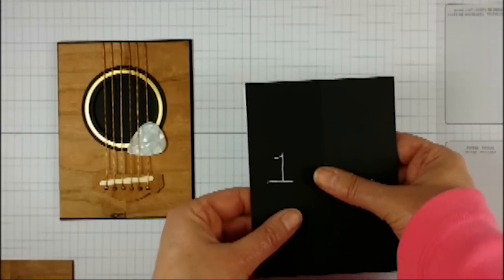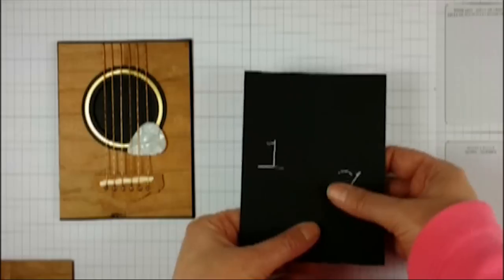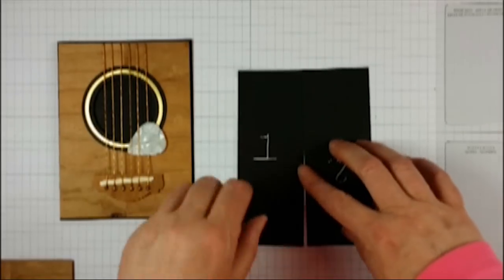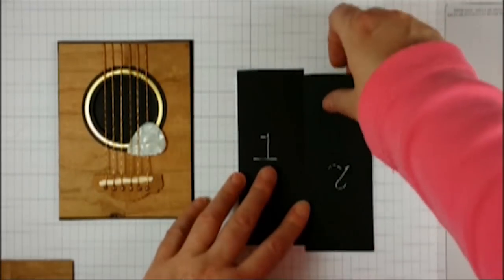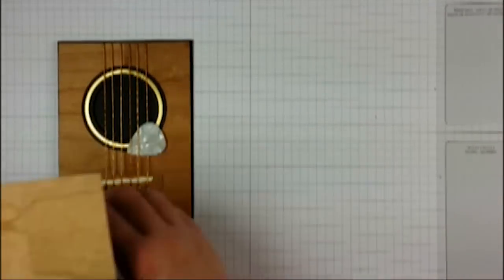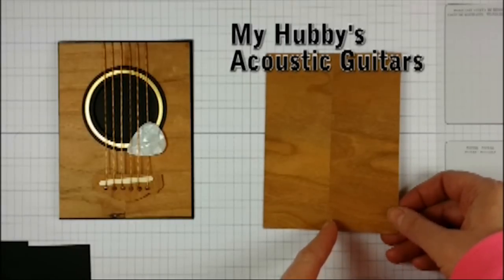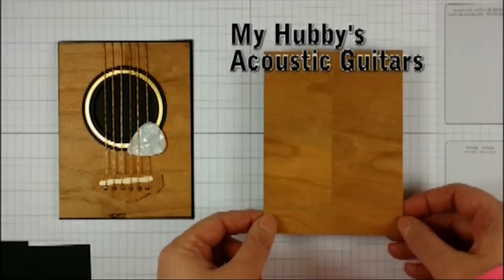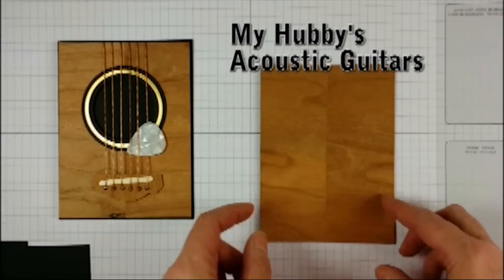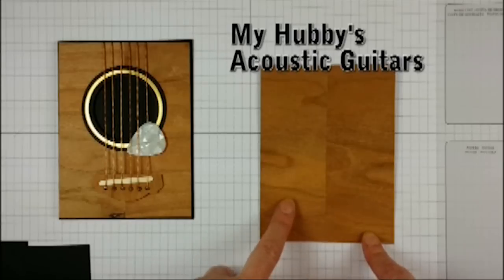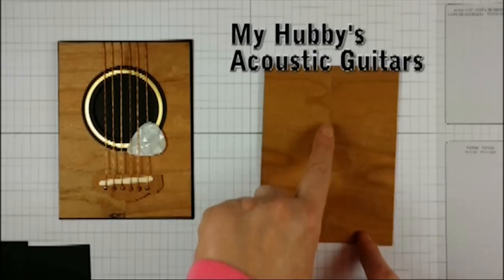Then I glued it down to a piece of backing cardstock to keep it secure because I'm going to be doing a lot of gluing and die cutting. I wanted the seam down the center because all of his acoustic guitars had the seam down the center.